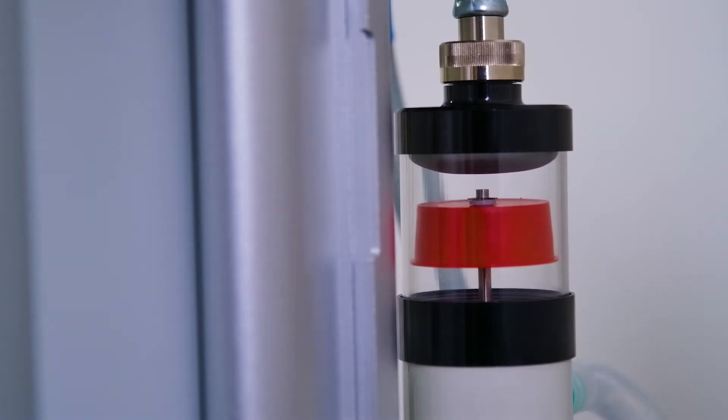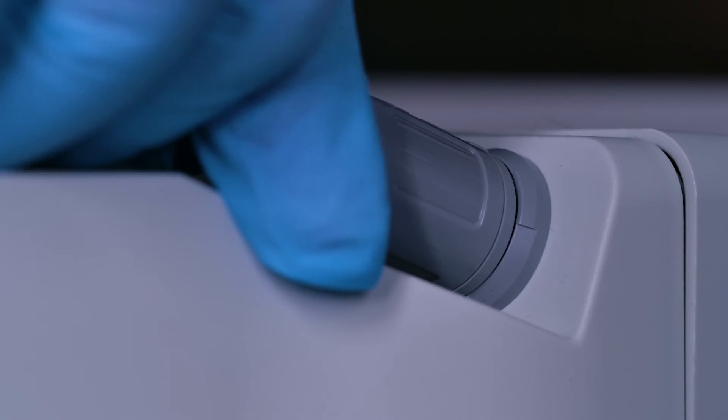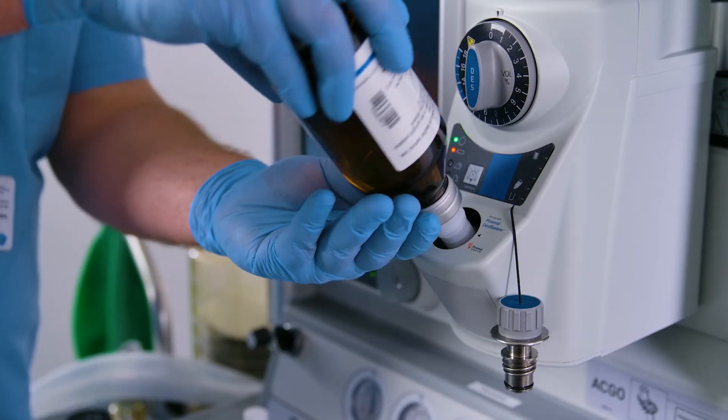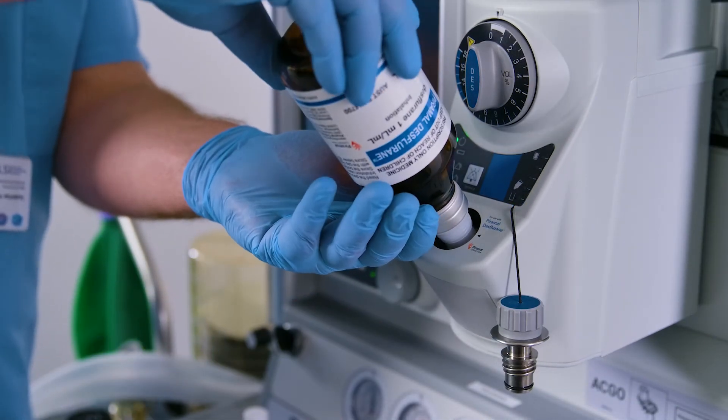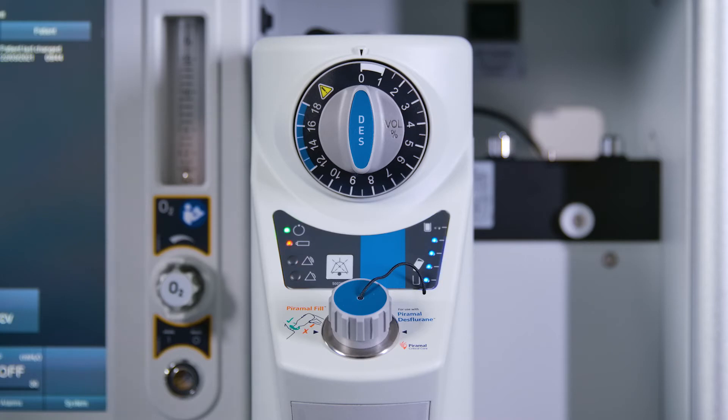Mount the vaporizer on an anesthetic machine equipped with an anesthetic gas scavenging receiver. Connect the electrical power supply cable. Fill the vaporizer with desflurane. Allow the vaporizer to finish warming up and enter standby mode. This is indicated by the power indicator being continuously illuminated.